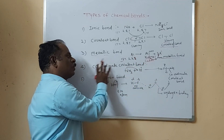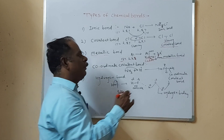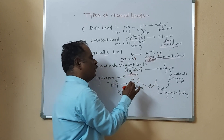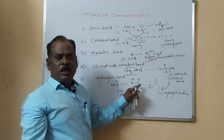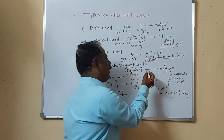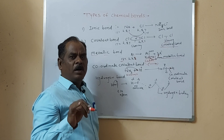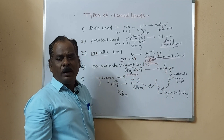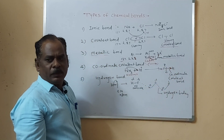Next is the coordinate covalent bond. This bond is also formed by sharing of electrons. But here, the sharing of a pair of electrons takes place from one of the bonded atoms. For example, ammonia reacts with hydrogen ion. Hydrogen has an electron deficiency. The nitrogen atom of ammonia shares its pair of electrons with the hydrogen ion to form a bond. That bond is called the coordinate covalent bond, and it is represented by a one-headed arrow pointing towards the electron-deficient atom.